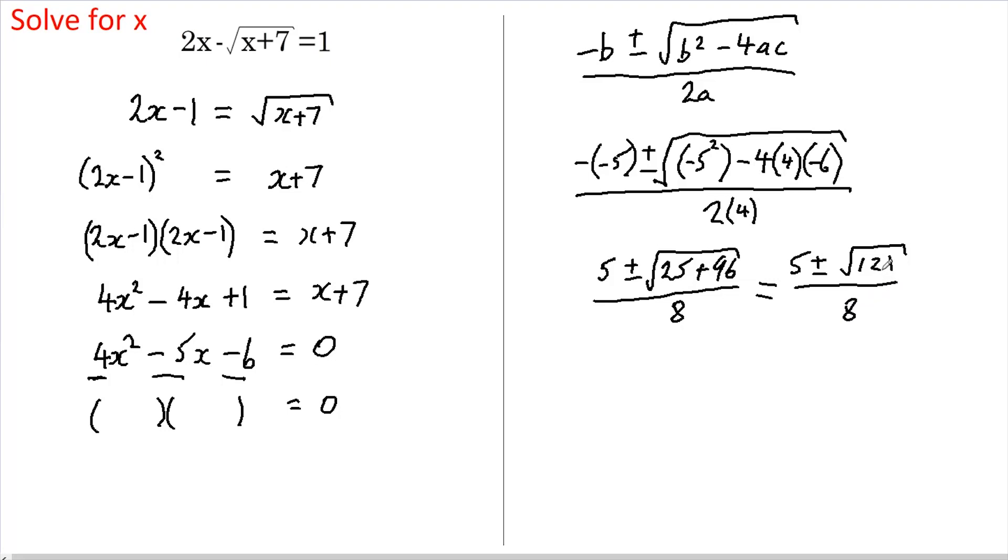The square root of 121 is 11. So 5 plus 11 is 16, so we've got 16 over 8. Or if we use the minus sign, we've got 5 minus 11, which is minus 6, so it's minus 6 over 8.